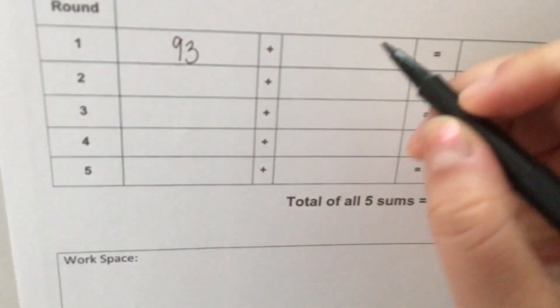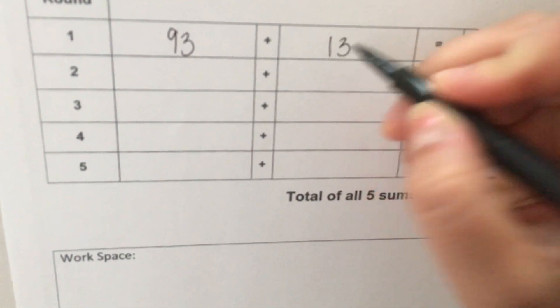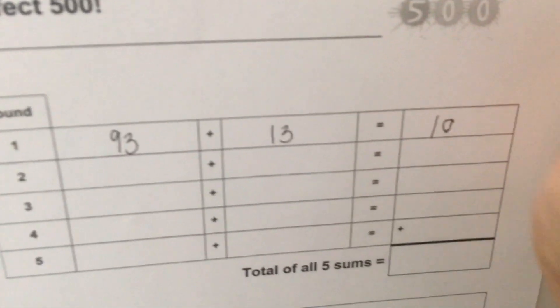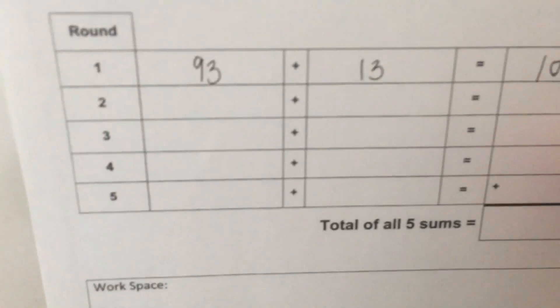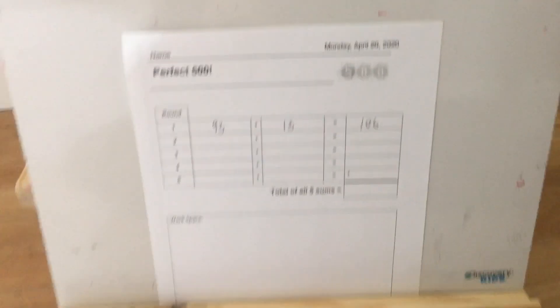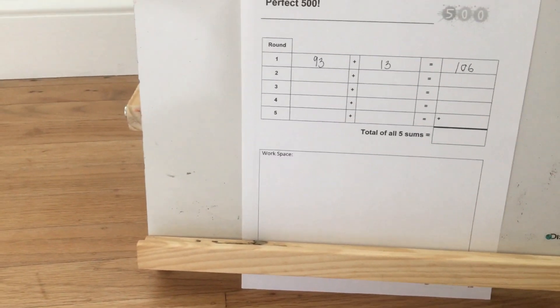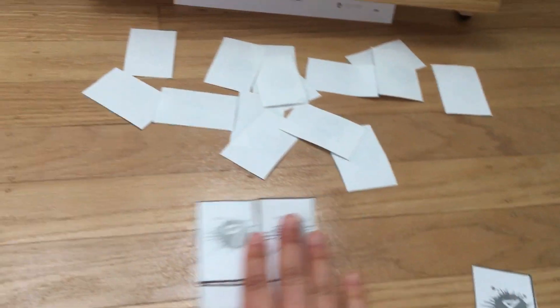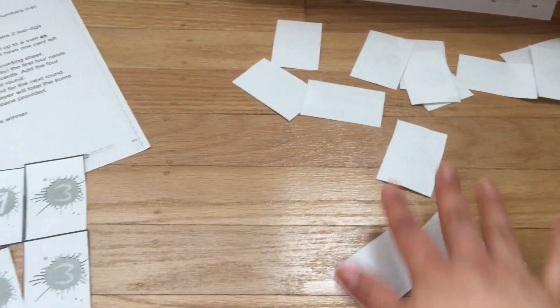Each round's gonna be a little different because you're gonna have different number cards. So I'm gonna write 93 plus 13 on my worksheet. 93 plus 13. I said it's a hundred and six. Now the tile, the number tile that I did not use, the eight, is going to stay for the next round. These are the ones get pushed aside and I'm gonna pull out four more cards.